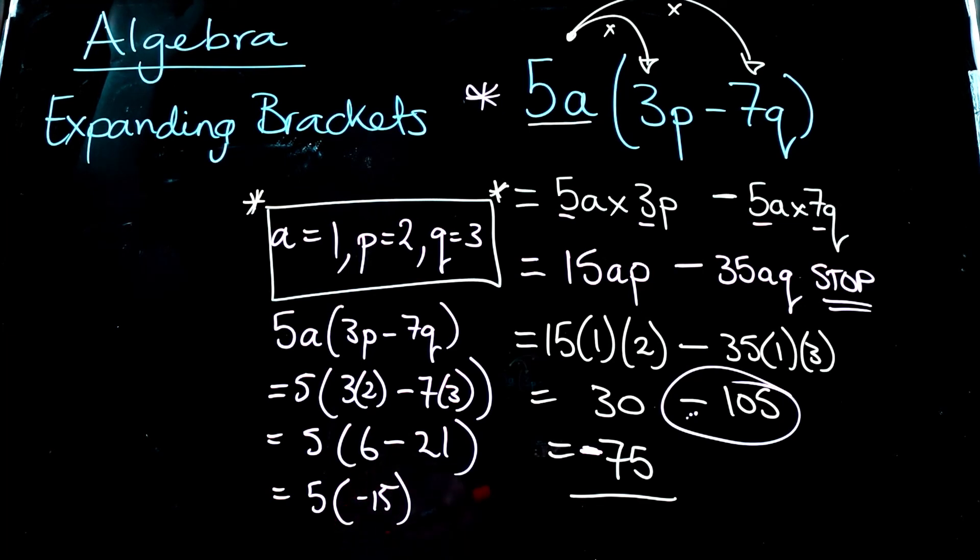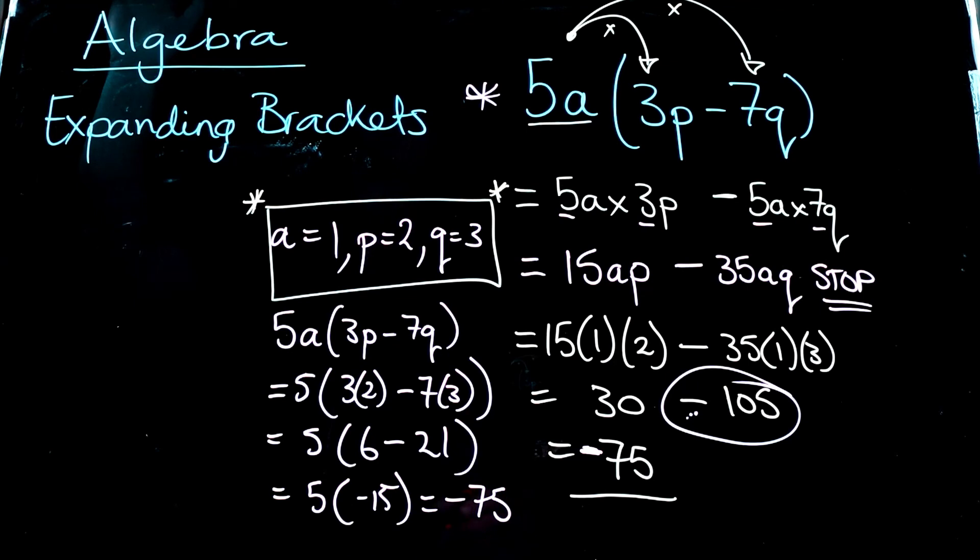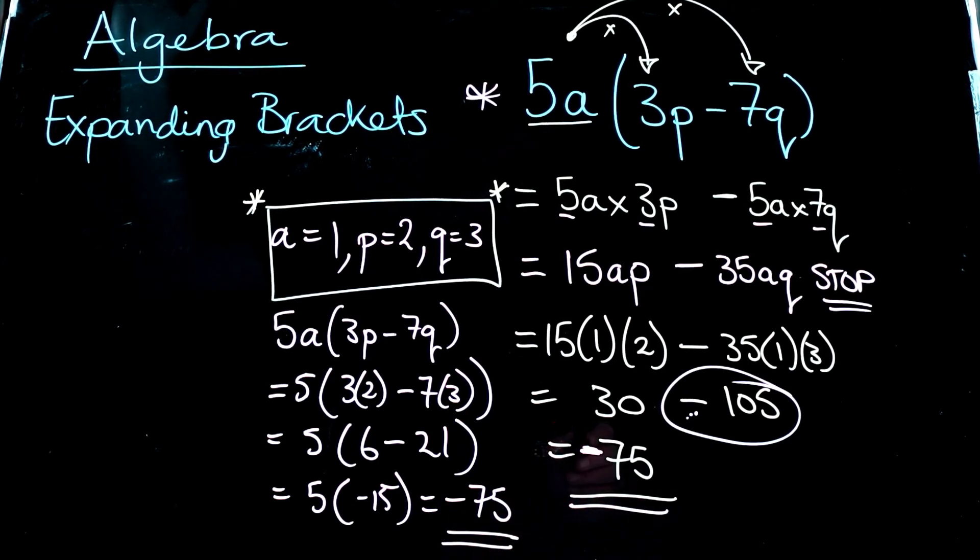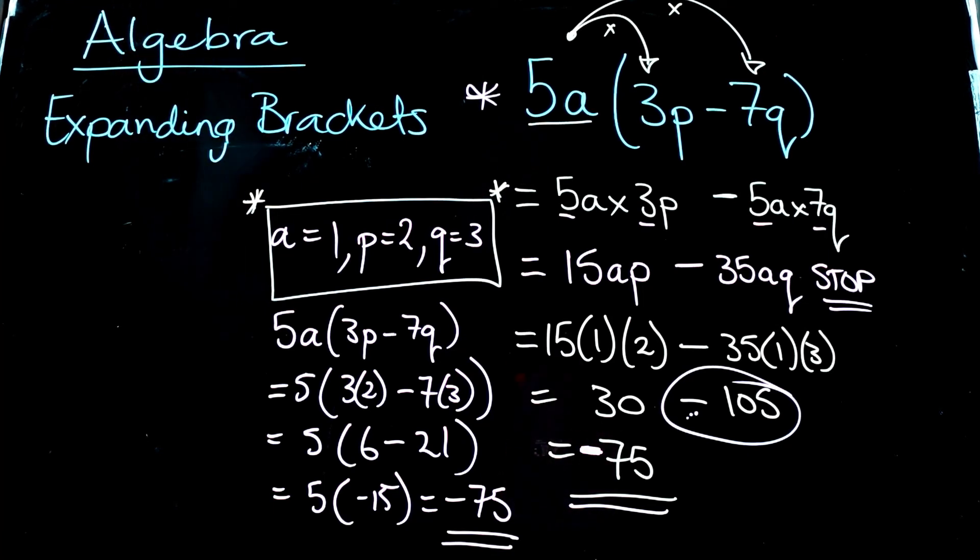And that is going to be working out, 4 times is 60, 75. So this is going to be equal to negative 75. And just by double checking both methods, I've picked up a mistake I would have made otherwise. So, brilliant. What we've got now is two equivalent expressions that produce the same answer.